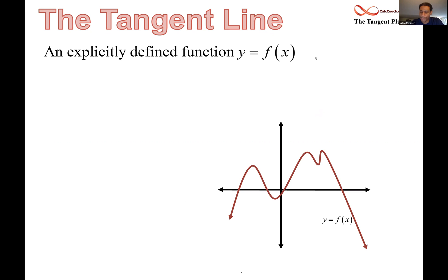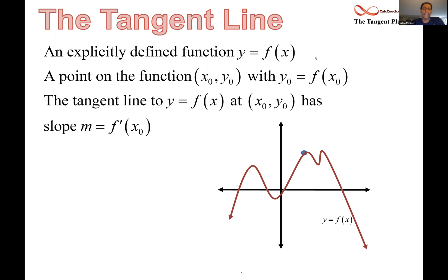We're interested in a tangent line at a particular point. x naught is the x value of the point. You plug that in, you get f of x naught, which is the y naught. So that point's on the curve, and we're interested in the tangent line that goes through that point and is tangent to the function.